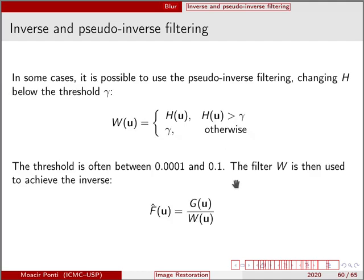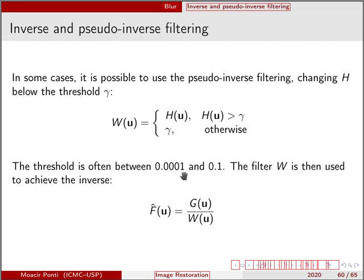To avoid this type of problem, we can use what is called pseudo-inverse filtering. The pseudo-inverse filter alters the H function at all values below some threshold gamma. If the coefficient magnitude is higher than the threshold, we use the original value; if below, we set it to gamma. This threshold is typically between 10⁻⁴ and 10⁻¹. The resulting filter W is then used to achieve the inverse.